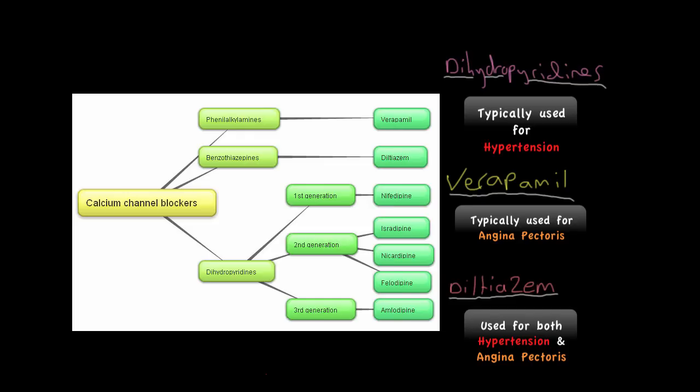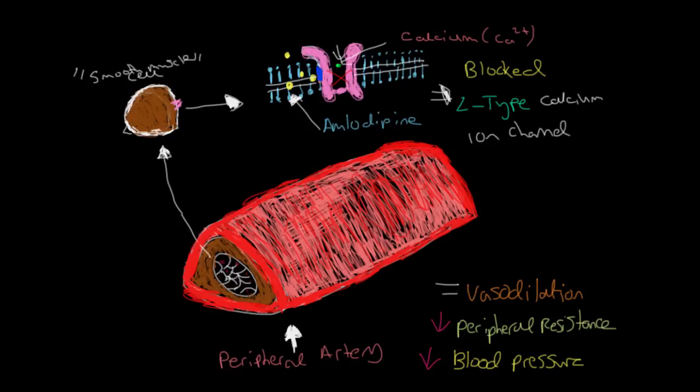The dihydropyridine drugs, an example of which could be amlodipine, are specific to vascular smooth muscle. Let's bring up a sketch of an artery to show how amlodipine acts. So here, in brown, is the tunica media, the layer containing smooth muscle cells. On the surface of these cells, in pink here, we have the L-type calcium ion channels that span the cell membrane and allow influx of calcium into the cell when required.